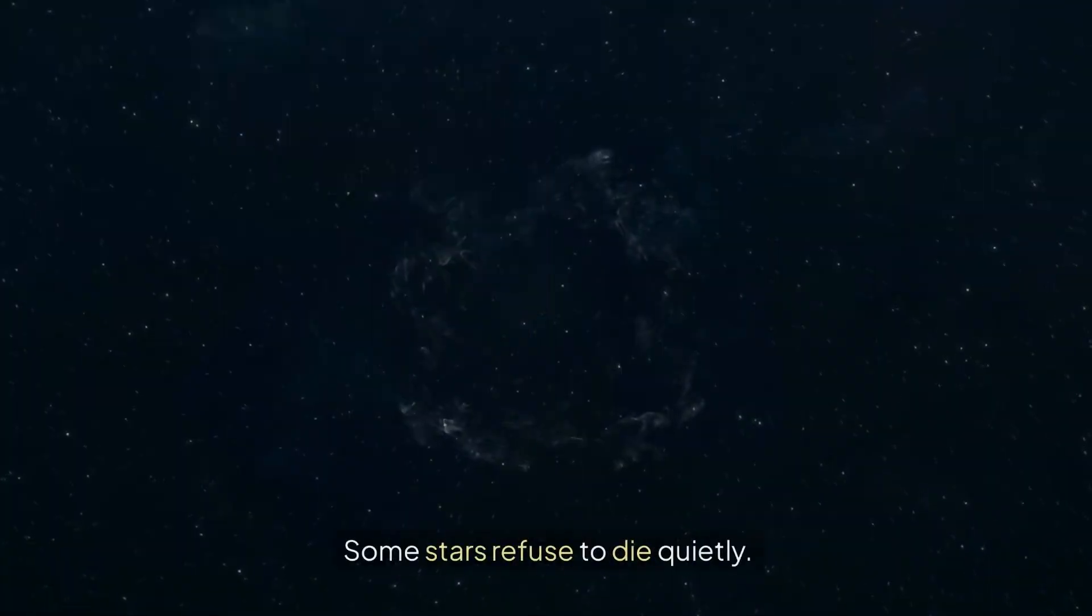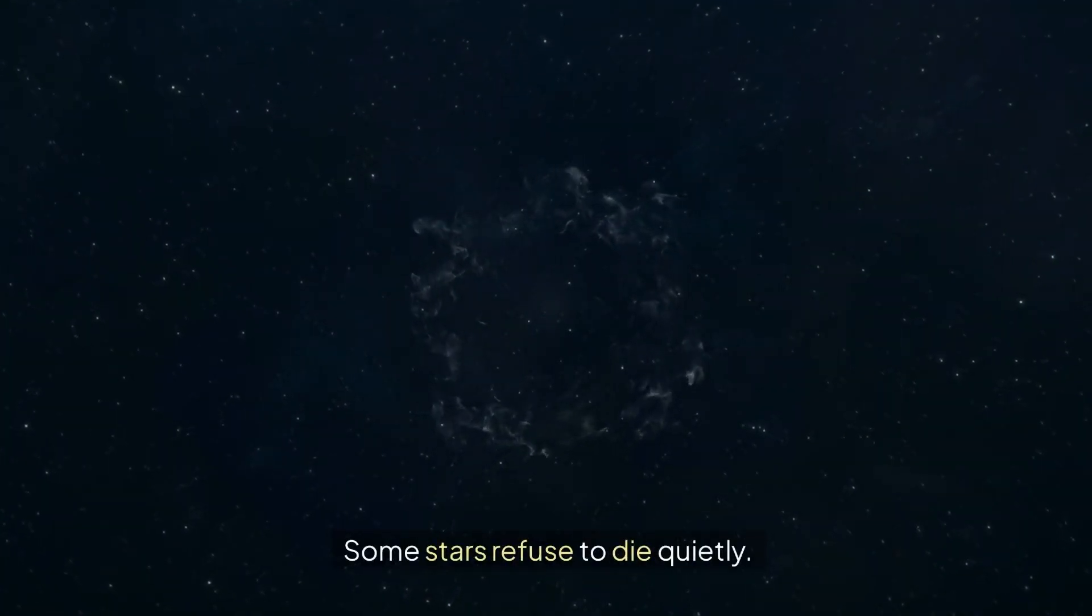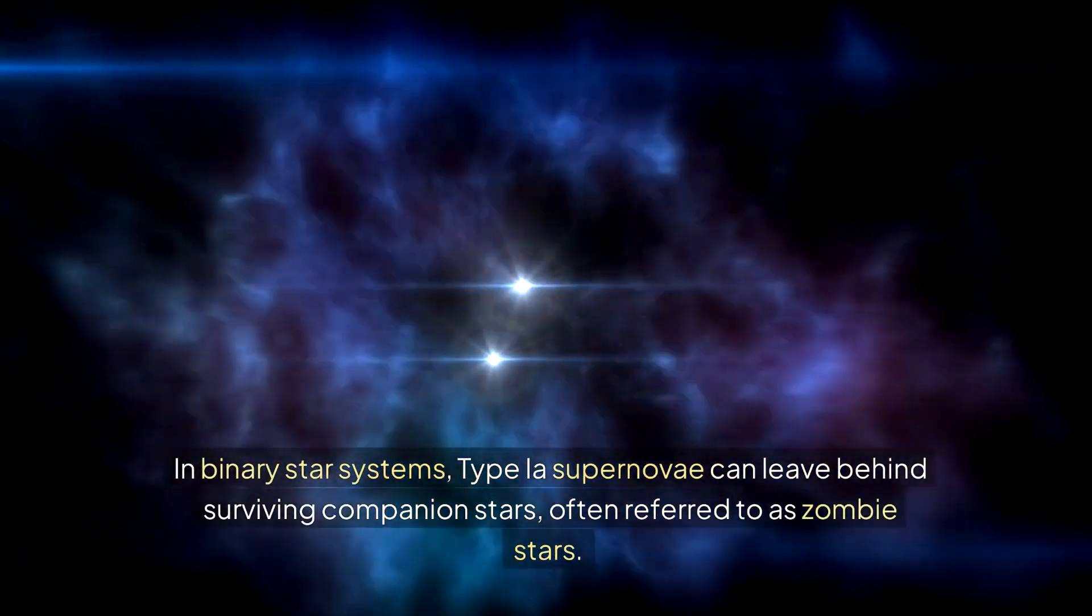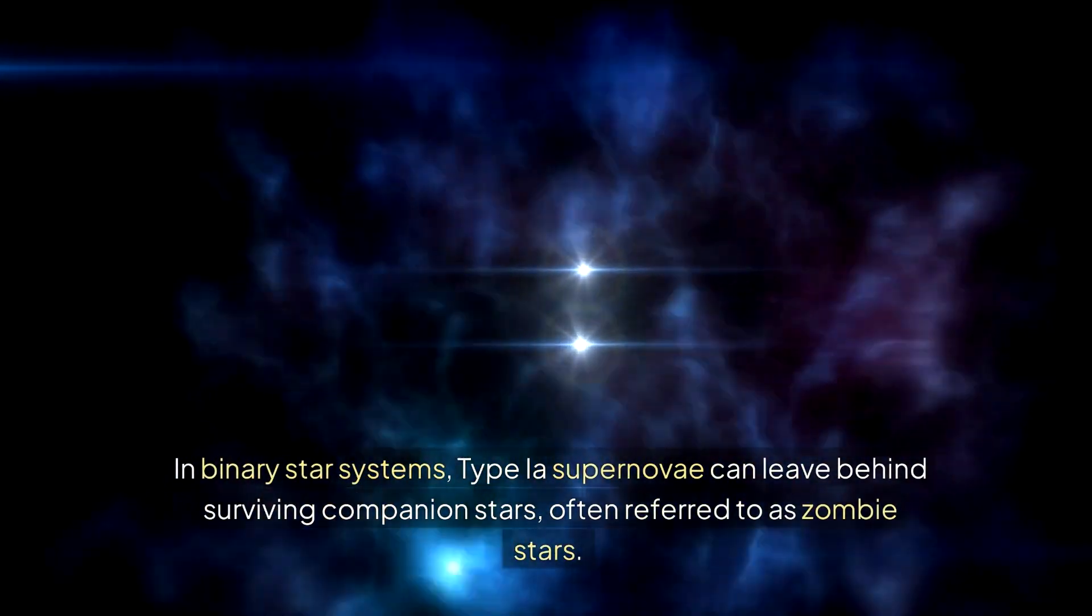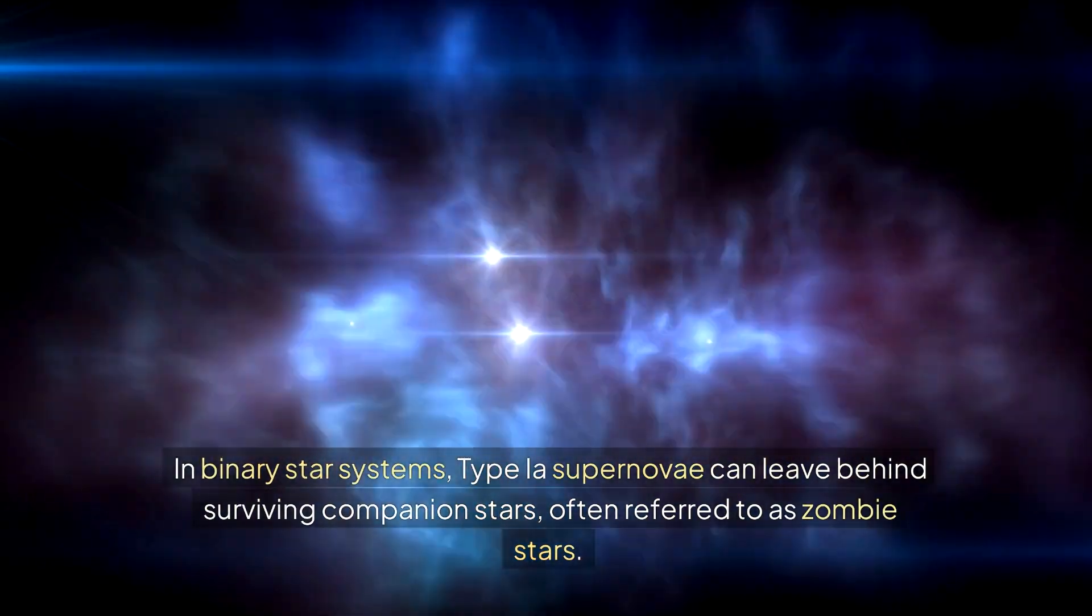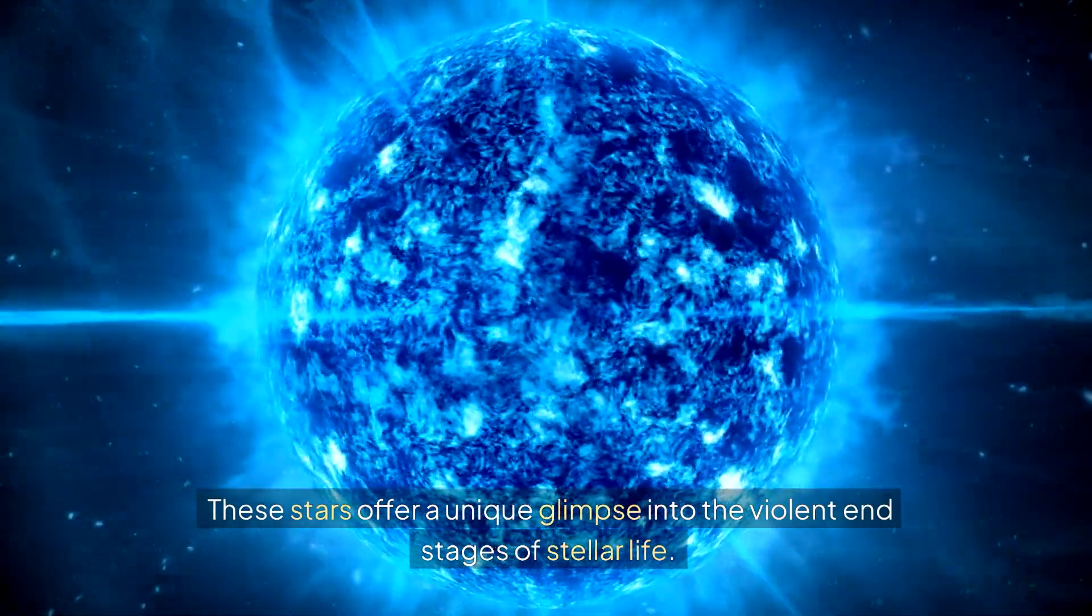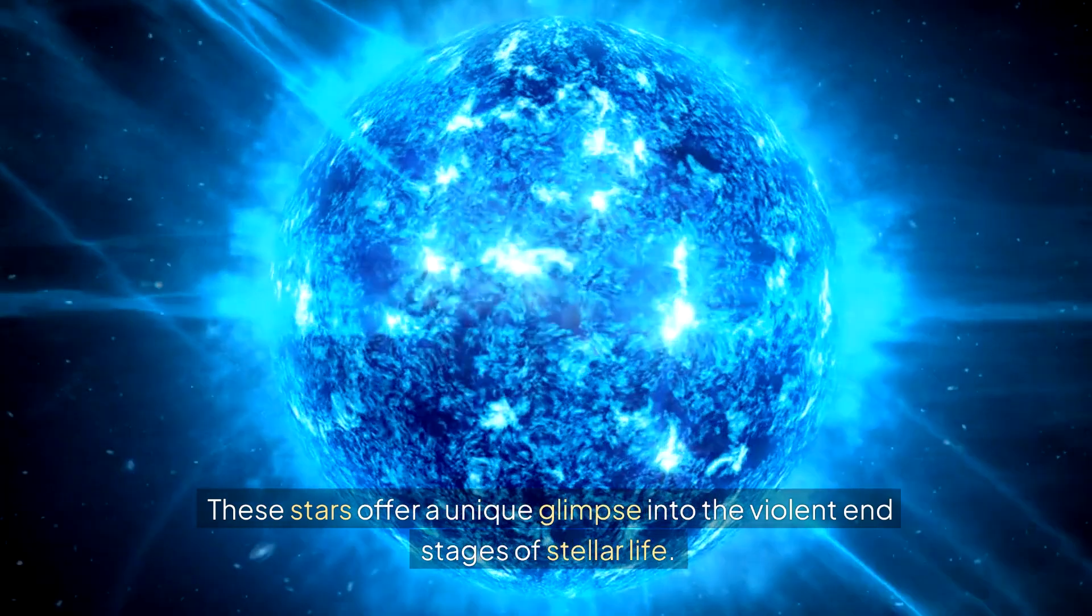Some stars refuse to die quietly. In binary star systems, type Ia supernovae can leave behind surviving companion stars, often referred to as zombie stars. These stars offer a unique glimpse into the violent end stages of stellar life.